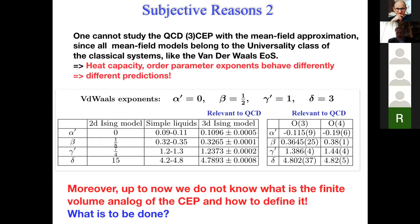Moreover, if you look at the critical exponents shown here for Van der Waals universality class and those which are relevant to QCD, shown in rows here, you see a large difference. So one cannot truly study the QCD critical endpoint with the mean field approximation because it belongs usually to the universality class of classical systems like Van der Waals. Therefore, the heat capacity or other parameter exponents behave differently and we will have different predictions. Moreover, up to now we do not know what is the finite volume analog of critical endpoint and how to define it rigorously on the theoretical side.